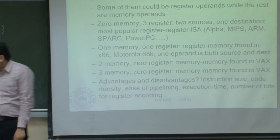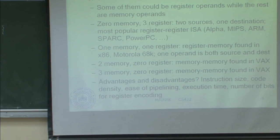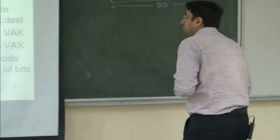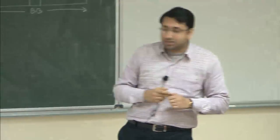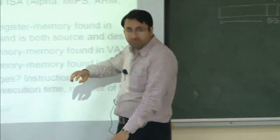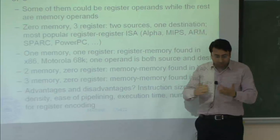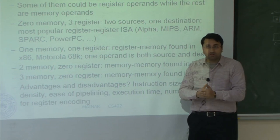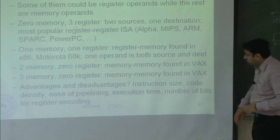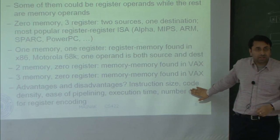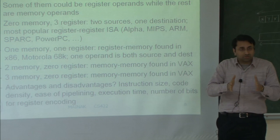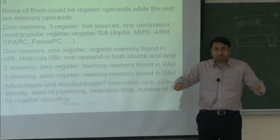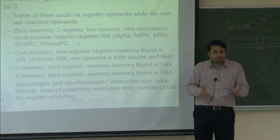There is a tradeoff: register-memory ISA requires fewer instructions because it encapsulates an ALU operation with a load or store, improving code density. But per instruction, you require more space. So it is not clear which way you go overall. The ISA is the starting point from which you design your processor, but it is a tightly coupled loop.